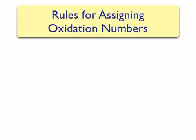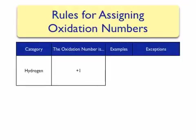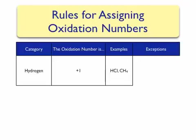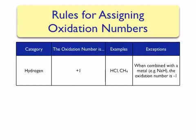The last two rules involve hydrogen and oxygen — atoms that are commonly combined with others to form compounds. For hydrogen, the oxidation number in most compounds will be plus one. For example, in hydrochloric acid (hydrogen chloride), hydrogen has a plus one oxidation number. For methane (CH₄), hydrogen also has a plus one oxidation number. There is an exception: when hydrogen is combined with a metal, such as in sodium hydride, the oxidation number will be minus one.